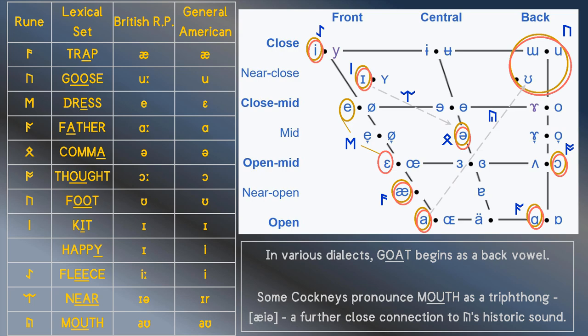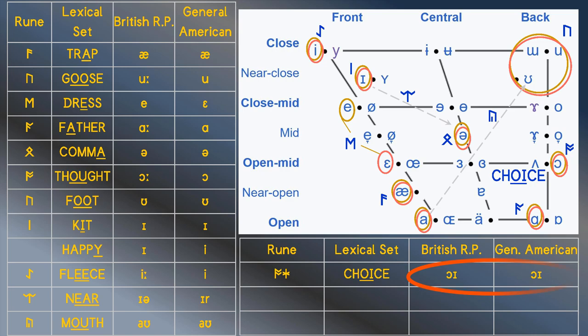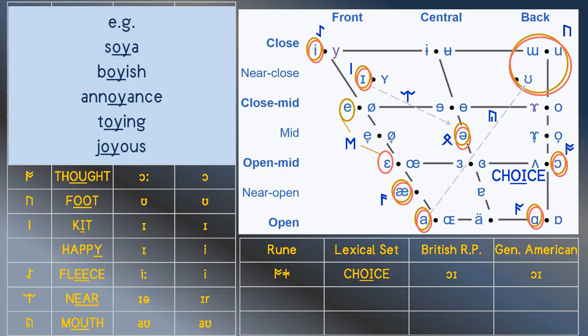This table is now out of space, but we have one vowel rune left to address, so let's do that. In both Britain and the Americas, the choice vowel is typically transcribed the same way in IPA. However, a variety of dialects slide it towards the fleece vowel rather than the kit vowel. Additionally, when a vowel immediately follows this diphthong, that final I sound frequently turns into a Y. Consider the words soya and boyish as examples.